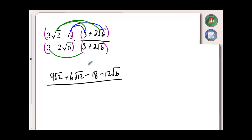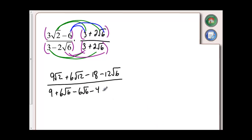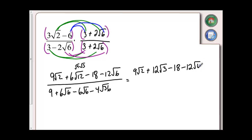Now I need to do the same thing to the bottom. 3 times 3 gives me 9. 3 times 2 root 6 gives me 6 root 6. 2 root 6 times 3 gives me negative 6 root 6. And 2 root 6 times 2 root 6 gives me negative 4 root 36. Now I can start simplifying. Root 12 is the same as root 4 times root 3, and root 4 is 2, so 6 times 2 is 12, and root 3 remains. I've got 9 root 2, plus 12 root 3, minus 18, and minus 12 root 6 on top. On the bottom, my 9 is fine, the positive and negative root 6 terms cancel, and root 36 is 6, so 4 times 6 is 24.